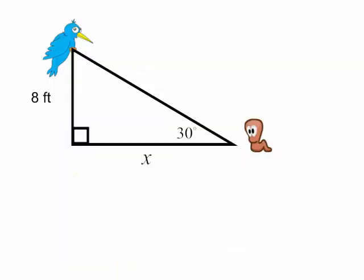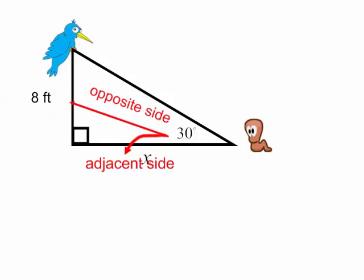Okay, so what information do I have? I know that this is a right triangle. I know I have a 30 degree angle. I am looking for the adjacent side. And I know the opposite side is 8. So this problem involves the opposite side and the adjacent side. That's tangent.